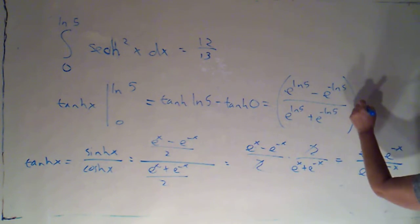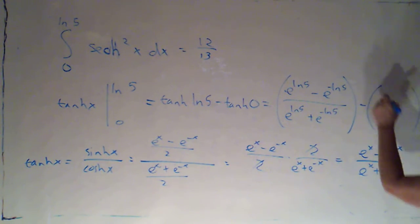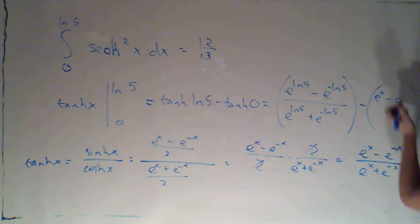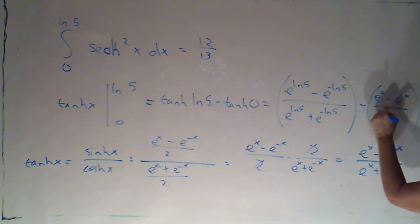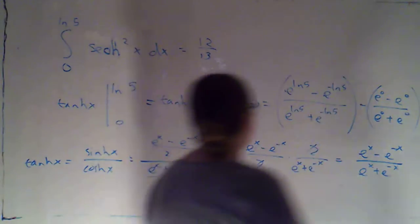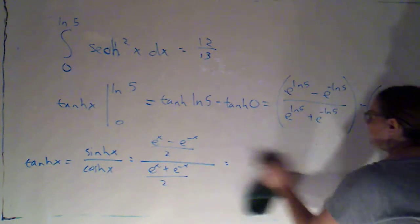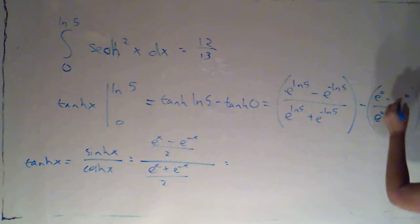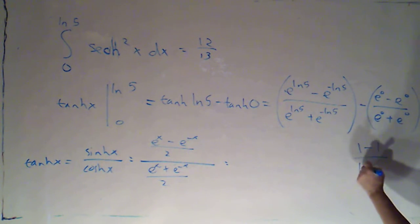If I didn't remember that, I can still just plug in. I'm going to get e to the 0 minus e to the negative 0 over e to the 0 plus e to the negative 0. Okay, so you'll notice this simplifies to 1 minus 1 over 1 plus 1, which is just 0.